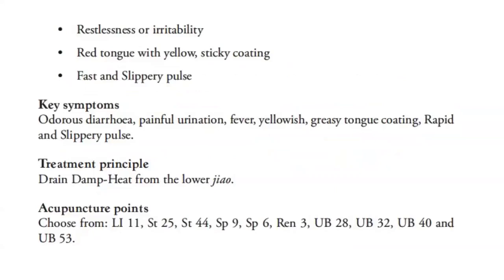The key symptoms would be odorous diarrhea, painful urination, fever, yellowish greasy tongue coating, and rapid slippery pulse. Treatment principle is to drain damp heat from the lower jiao. Acupuncture points to choose from: LI 11, Stomach 25, Stomach 44, Spleen 9, Spleen 6, Ren 3, Bladder 28, Bladder 32, Bladder 40, and Bladder 53.